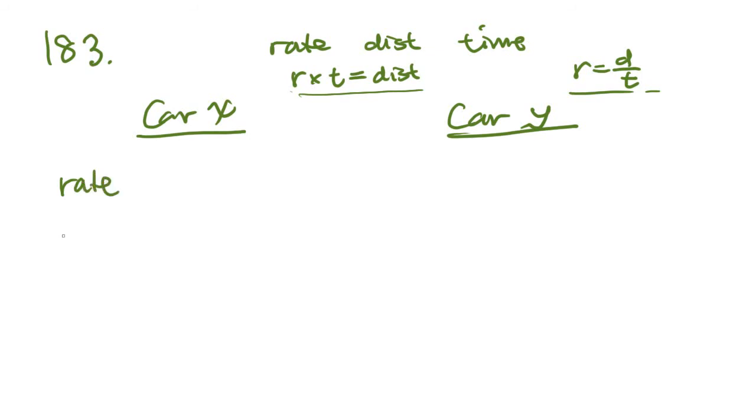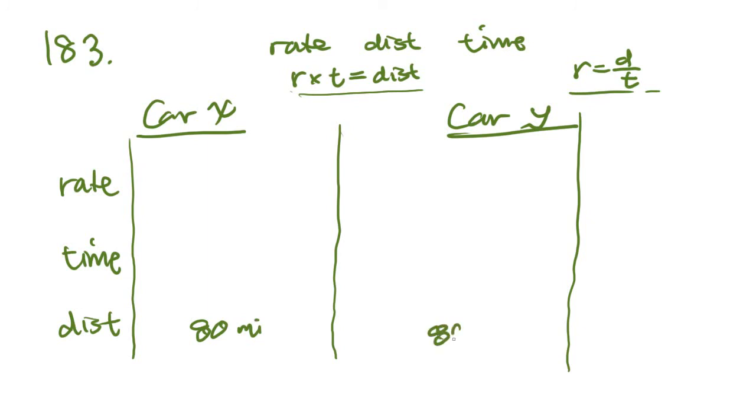Let's write them out actually. Rate, time, and distance. I'm going to make a little chart here. So car X and car Y. Now they say that they traveled the same 80 mile route, so we know the distance is going to be 80 miles. Both cars traveled the same distance. Car X took two hours to do it. So two hours for car X. And car Y, they don't tell you, so let's use a variable. Let's just say T. Car Y used T.